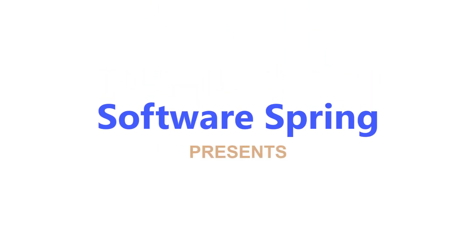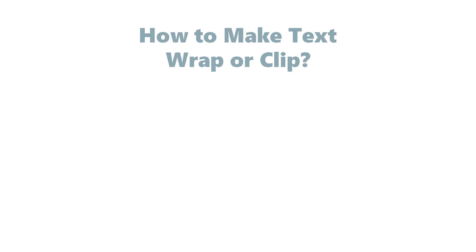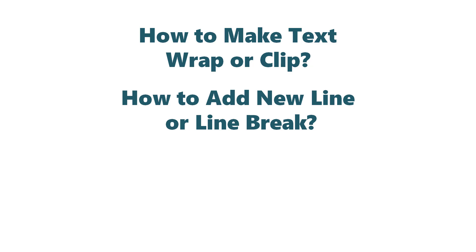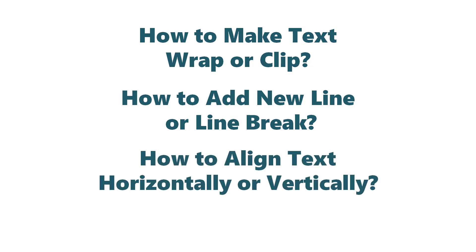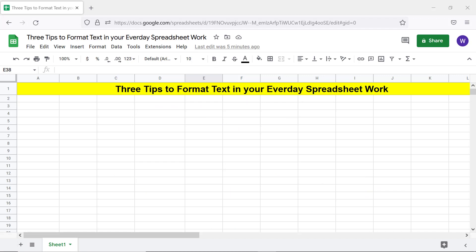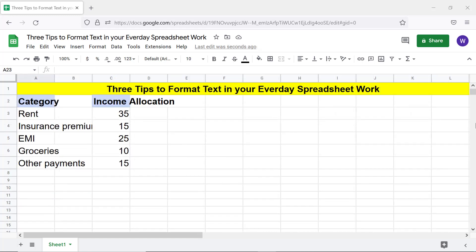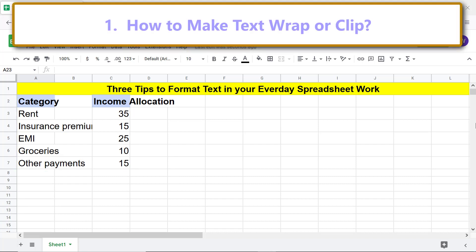Software Spring presents: how to make text wrap or clip, how to add a new line or line break, and how to align text horizontally or vertically in Google Sheets. Welcome to this tutorial which gives three Google Sheets tips on formatting text in your everyday spreadsheet work.